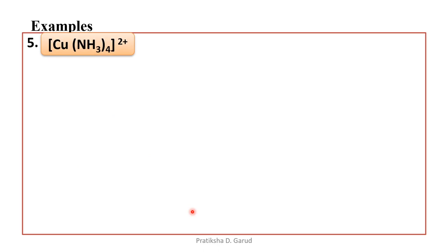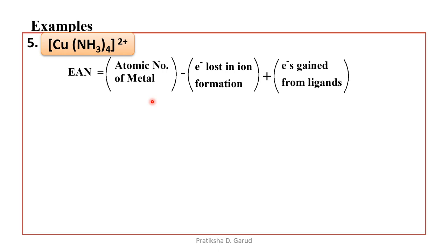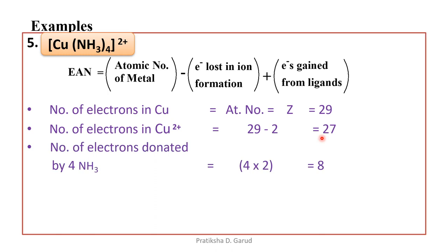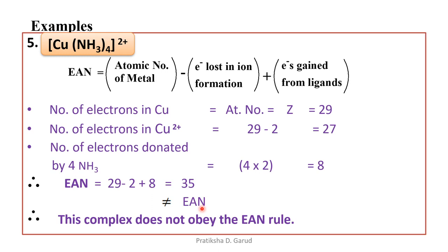Fifth example: [Cu(NH₃)₄]²⁺. Ammonia is the neutral ligand, so the charge on copper will be +2. EAN = atomic number of metal − electrons lost in ion formation + electrons gained from ligands. Number of electrons in copper, atomic number Z = 29. Number of electrons in Cu²⁺ = 29 − 2 = 27. Number of electrons donated by 4 NH₃: for each NH₃ we count 2, so 4 × 2 = 8. Therefore, EAN = 29 − 2 + 8 = 35, which is not the effective atomic number. Hence, this complex does not obey the EAN rule.